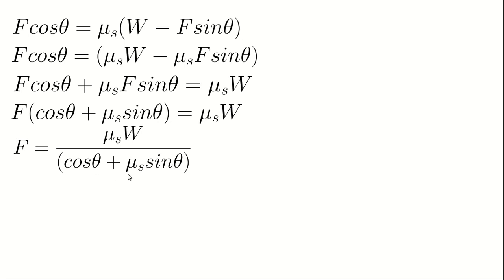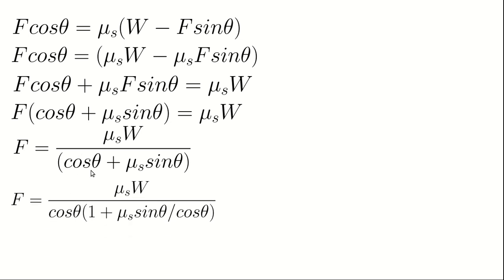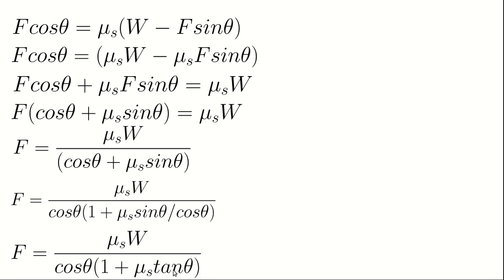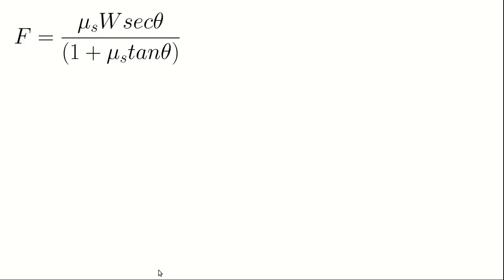We can simplify this expression further by factorizing cosθ out of the denominator. This gives F = μsW divided by cosθ times (1 + μs tanθ), since sinθ over cosθ equals tanθ. And since 1 over cosθ equals secθ, the final expression becomes F = μsW·secθ divided by (1 + μs tanθ).